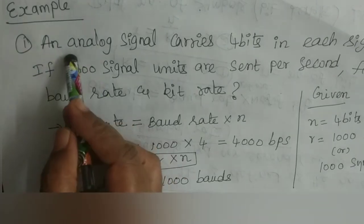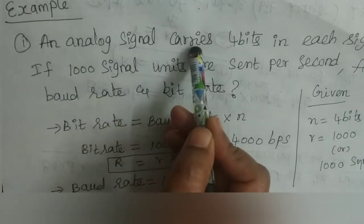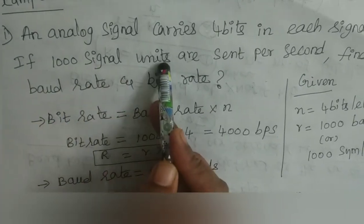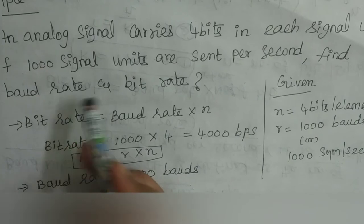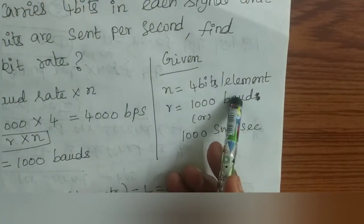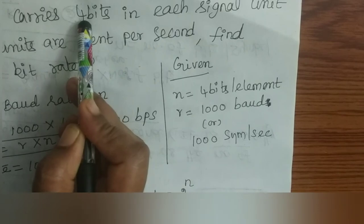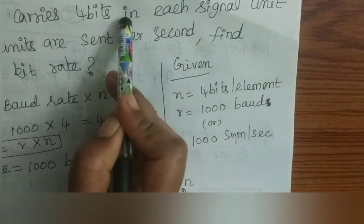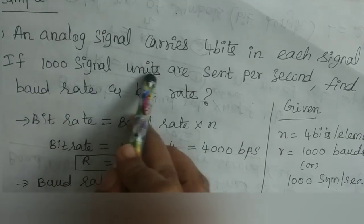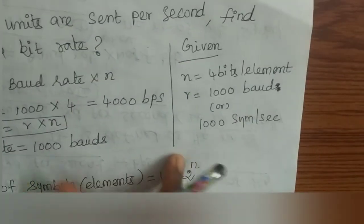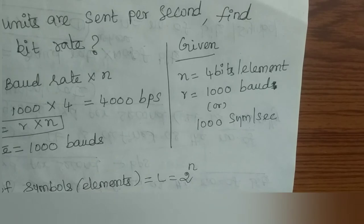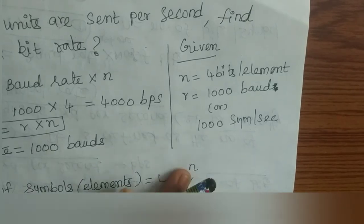Let's see an example for bit rate and baud rate. An analog signal carries 4 bits in each signal unit. If 1000 signal units are sent per second, find the baud rate and bit rate. From the problem: n, the number of bits per element, is 4 bits. The number of signal units per second is 1000, so the baud rate small r equals 1000 baud.